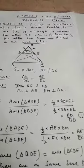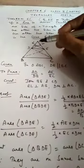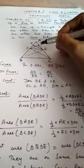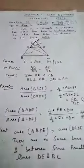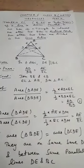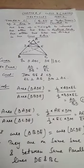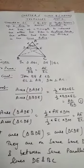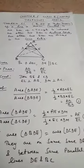Now we take the area of triangle ADE and CDE. Taking ADE's area with base as AE, DM is the perpendicular. So the ratio of area of ADE to area of CDE is half into AE into DM divided by half into EC into DM, which becomes AE by EC.